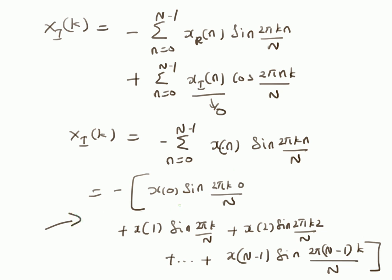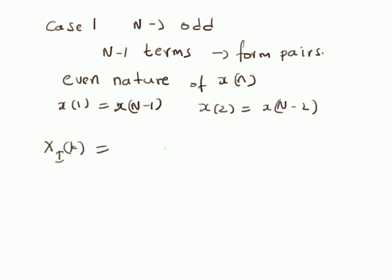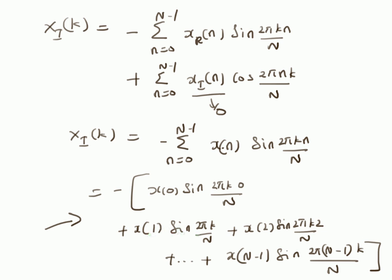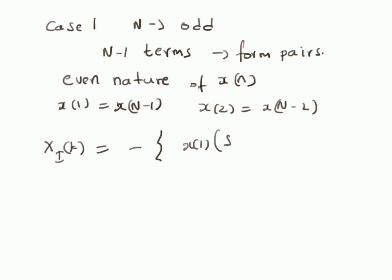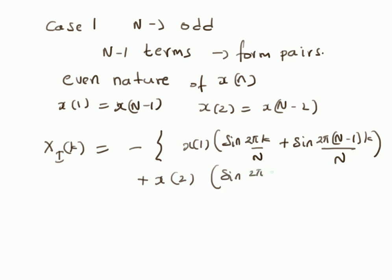Therefore this summation can be written as: X_i(k) equals — the first term is zero, and in the next N-1 terms, x(1) is common for the first and last term, so we have x(1) multiplied by [sin(2πk/N) + sin(2π(N-1)k/N)], and similarly x(2) multiplied by [sin(2π·2k/N) + sin(2π(N-2)k/N)], and so on for all other terms.